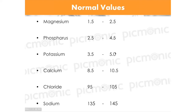Starting with hypomagnesemia — a low magnesium level. Magnesium causes muscle relaxation as a general theme. If I take away all the magnesium, are the muscles going to be excited or relaxed? They're going to be very excited — crazy, jumping, on the edge of their seat. Our hypomagnesemia Picmonic shows this hippo that's angry and ready to charge up.